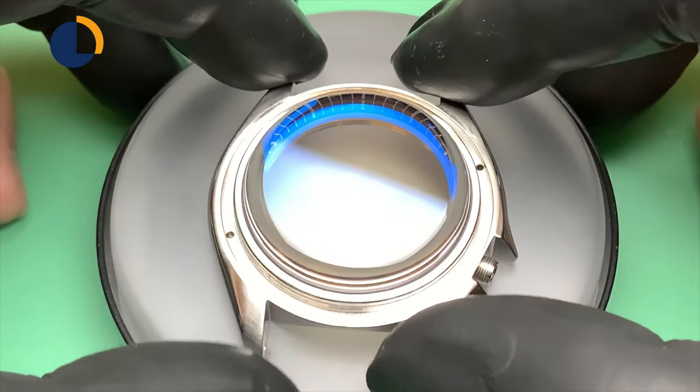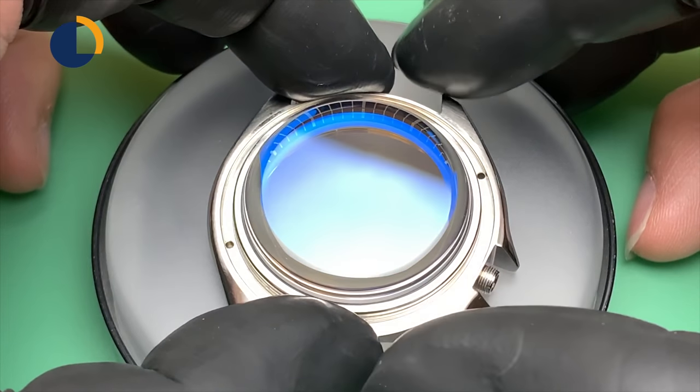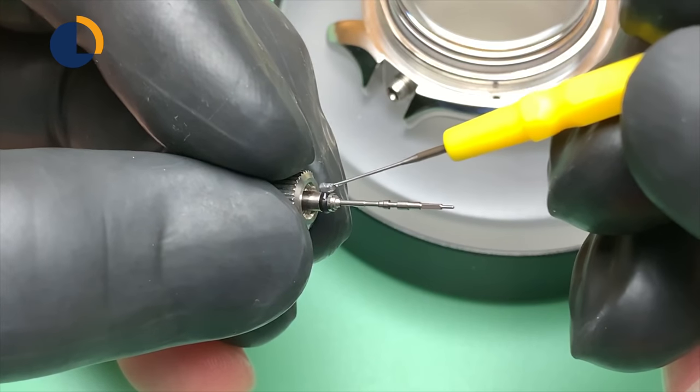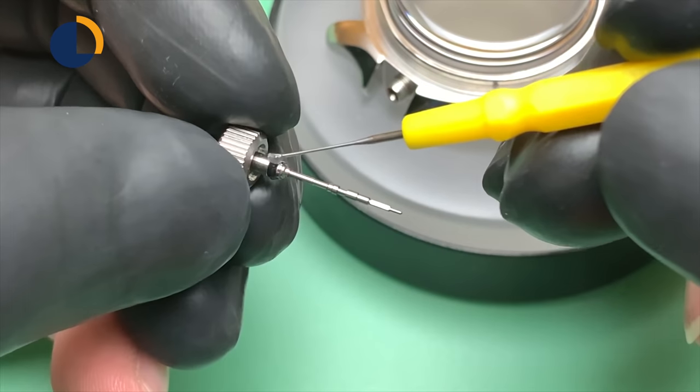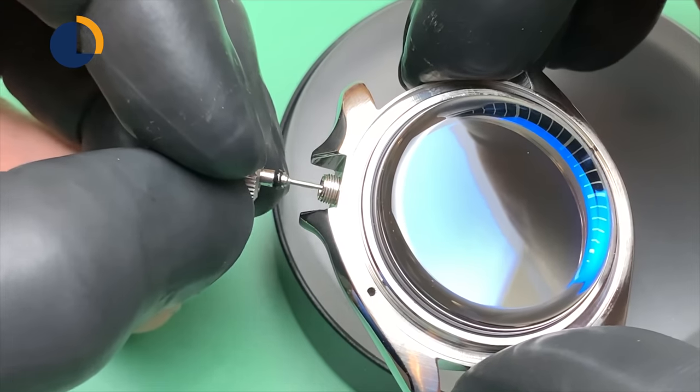After the crystal has been replaced, now I'm installing the whole watch case back. That will include the crown and stem assembly. Now I'm applying some silicone grease on the o-ring so it will keep watertight. And then the case back o-ring and the case back. Again, we are testing the waterproof of the case.